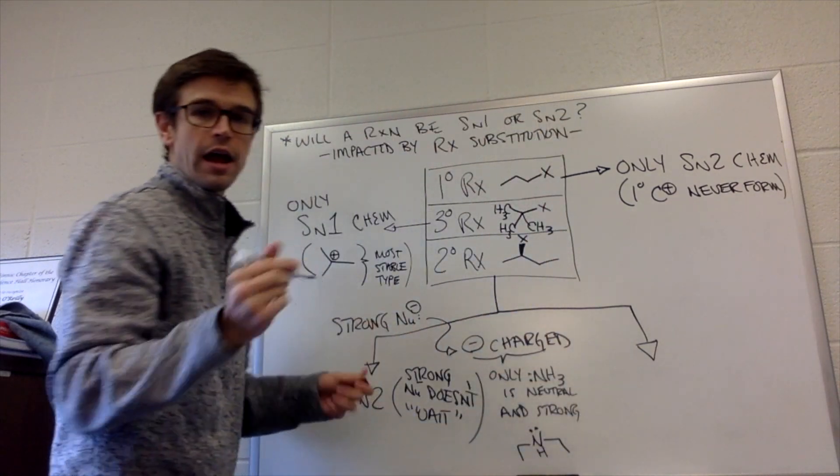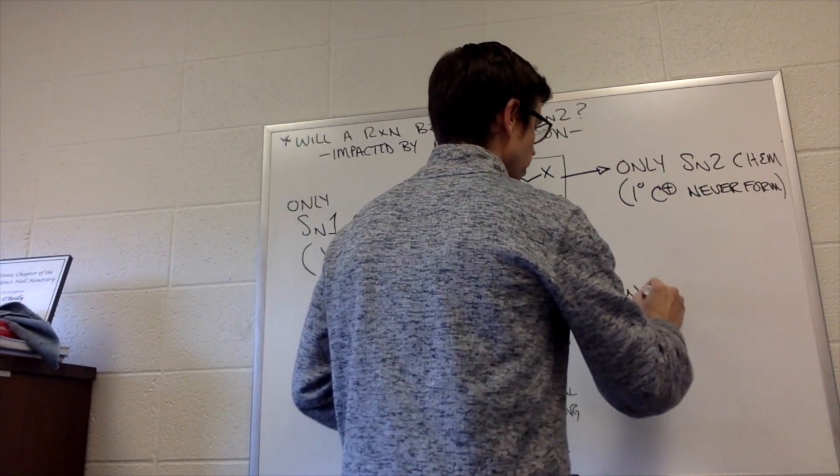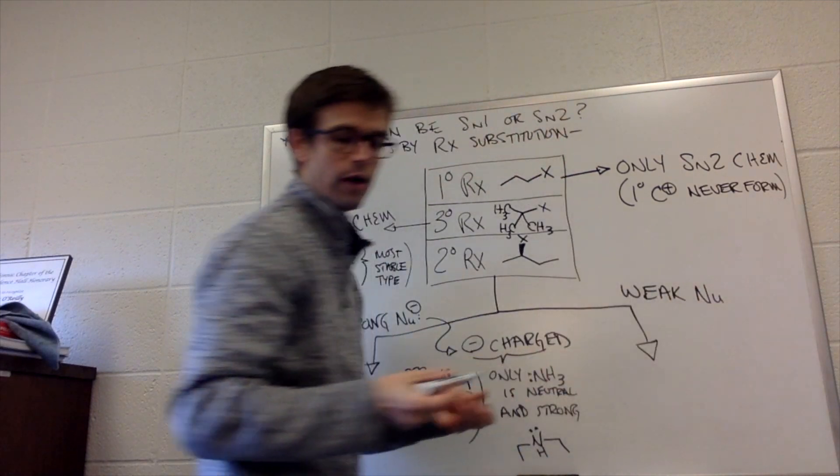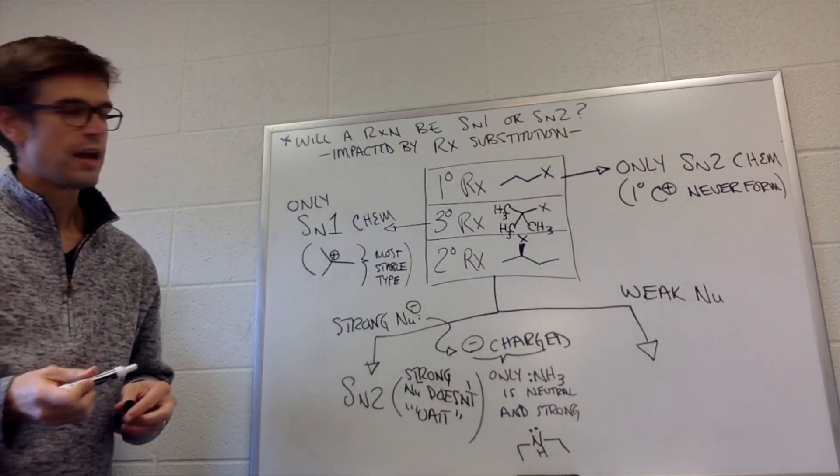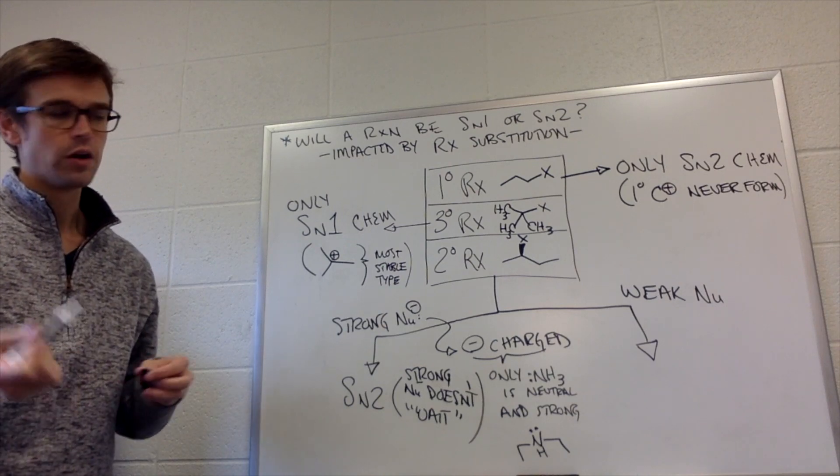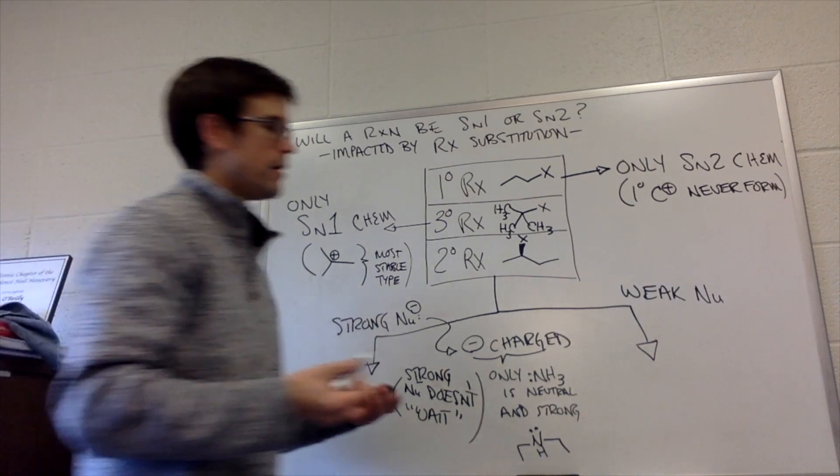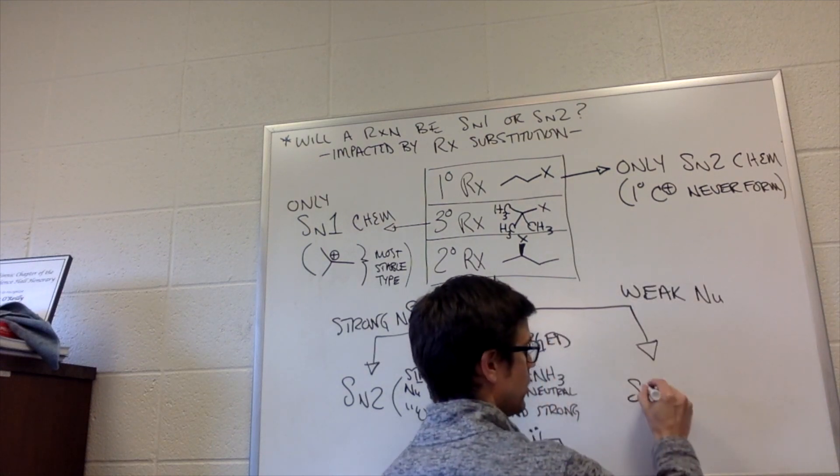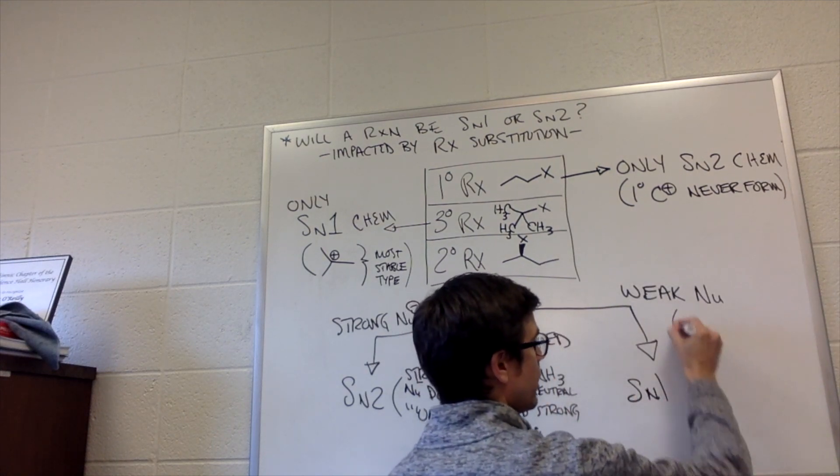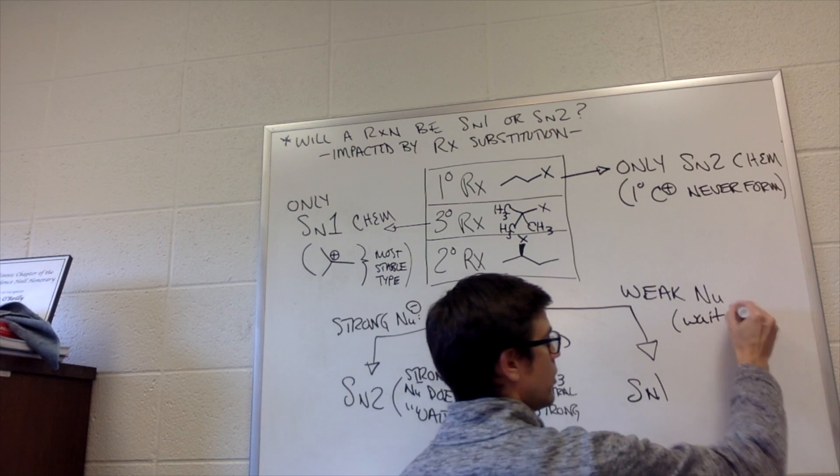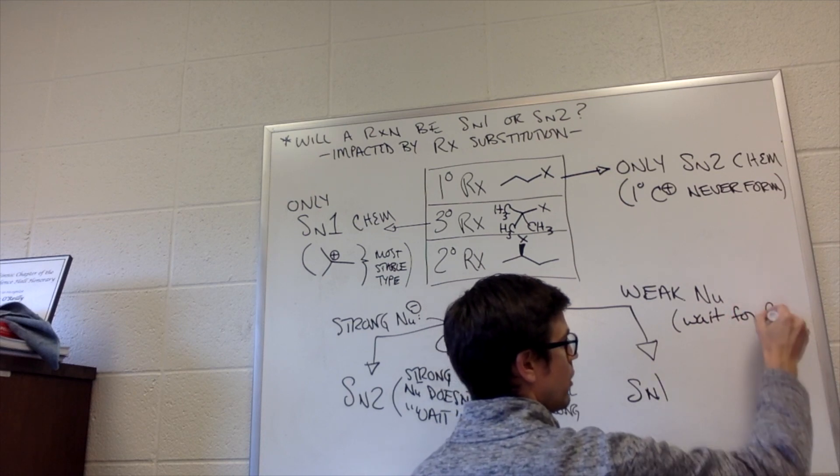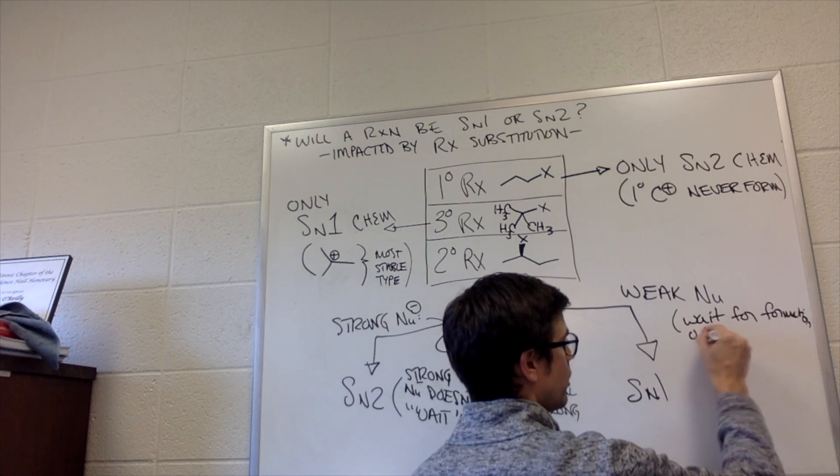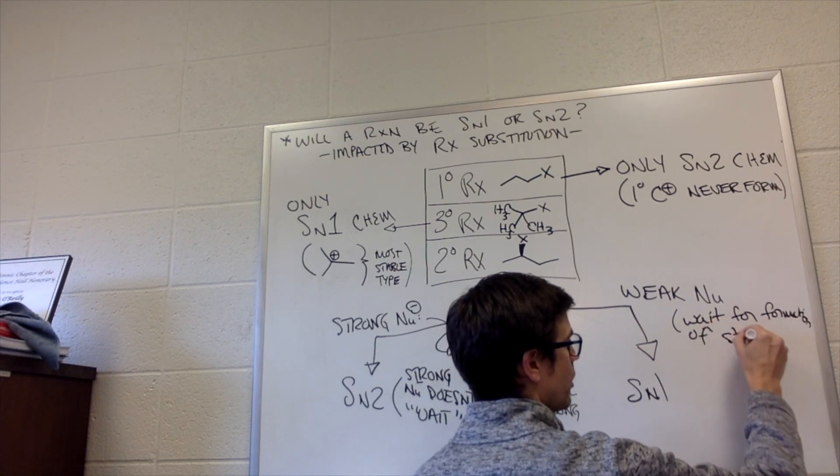What's the other case? Other case is if we have a weak nucleophile. Weak nucleophiles do wait around. They are not strong enough to react immediately. They do SN1. They wait for formation of strong electrophiles.